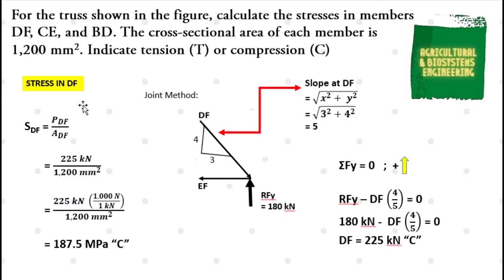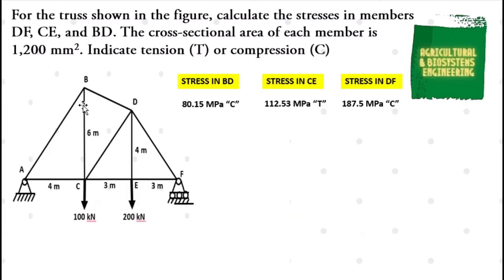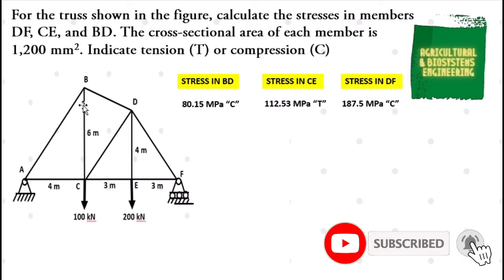In summary: stress in BD is 80.15 megapascal (compression), stress in CE is 112.53 megapascal (tension), and stress in DF is 187.5 megapascal (compression). That is the solution for our problem. Please subscribe before you exit.